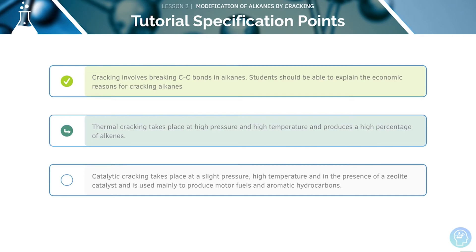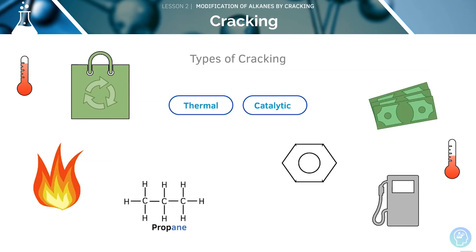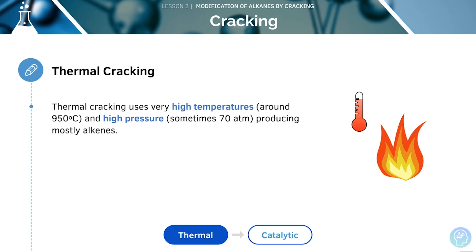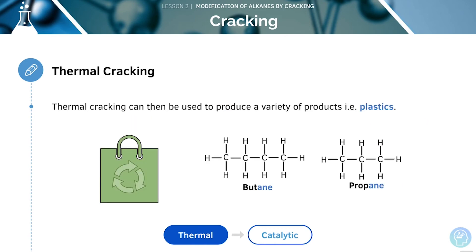Now let's move on to look at thermal cracking. There are two main types of cracking that we'll look at today: thermal cracking and catalytic cracking. Thermal cracking uses very high temperatures and very high pressures. The end products of thermal cracking are mainly alkanes, which can then be used to produce a variety of products, such as plastics.